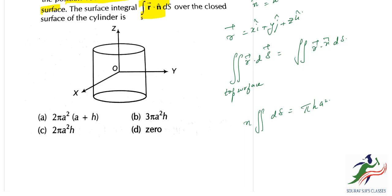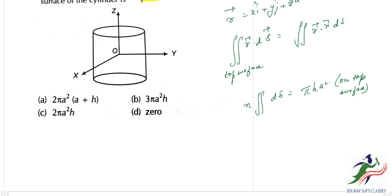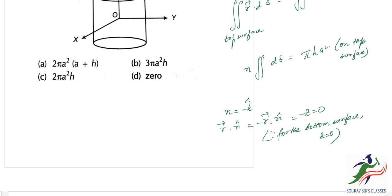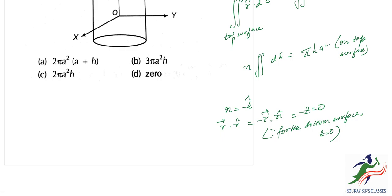Now for the bottom surface: n̂ equals negative k̂, and r·n̂ equals negative z. Since for the bottom surface z equals zero, r·n̂ equals zero. Therefore the double integral over the bottom surface of r·dS equals zero.